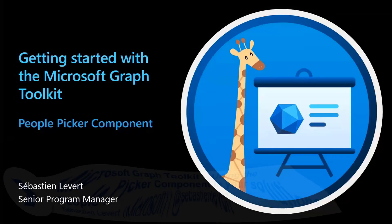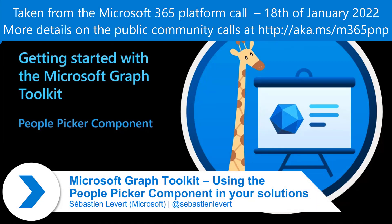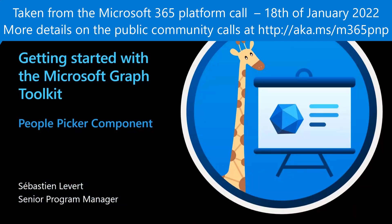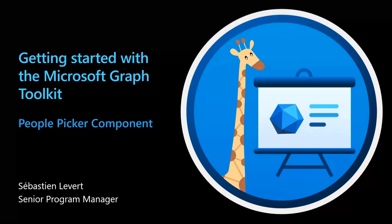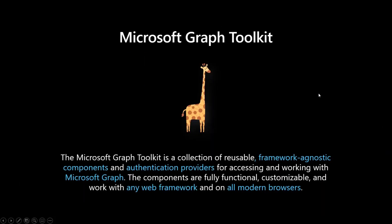We will be covering the people picker today. In our journey to look at a vast majority of our controls within the Microsoft Graph Toolkit, we're going to talk about the people picker and how it drives value to select different types of entities around groups and users inside Microsoft Graph. But before we go into demo mode, let's do a quick recap of what the Microsoft Graph Toolkit — or MGT — is.